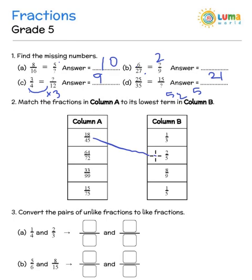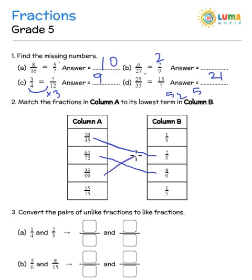The next one: 64 divided by 72. You see that the 8 times table goes in common. So 8 eights are 64 and 8 nines are 72. The next one is 33 divided by 99 — you have the 11 times table which goes into both. So it becomes 3 by 9. Remember 3 by 9 has to be further simplified — 3 times table is in common — so it becomes 1 by 3. Or you could directly do it: 33 ones are 33 and 33 threes are 99, so directly it is 1 by 3.